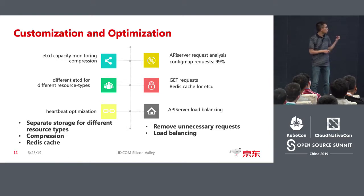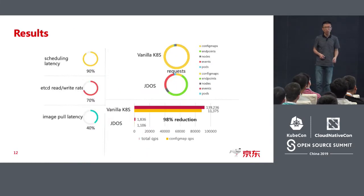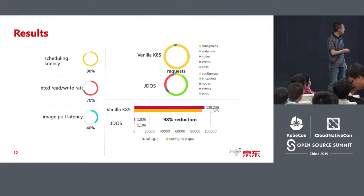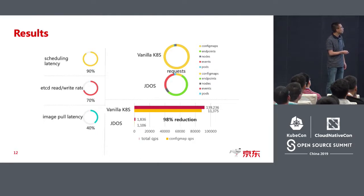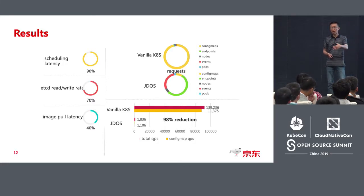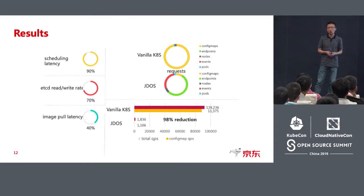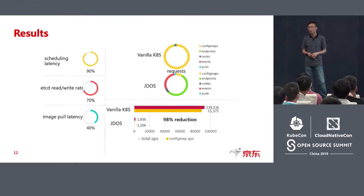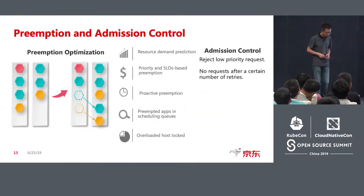Back to the ETCD and API server optimization — this slide shows the results we achieved. For scheduled latency, we reduced it by 90%, and ETCD read and write rates increased by 70%. For the ETCD reduced rate, most API server requests were constrained to config maps. If they are not necessary, we delete those requests. In JD, we first ran Kubernetes 1.6 and now have version 1.12. We have done many optimizations and customizations. The API server remains the main bottleneck.